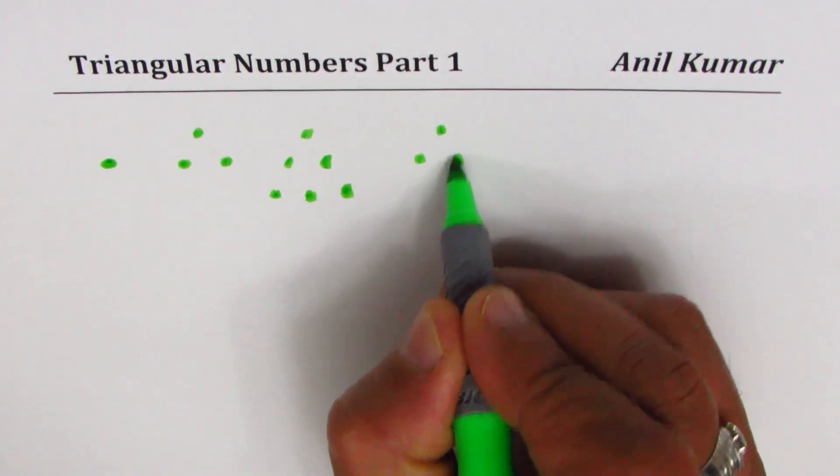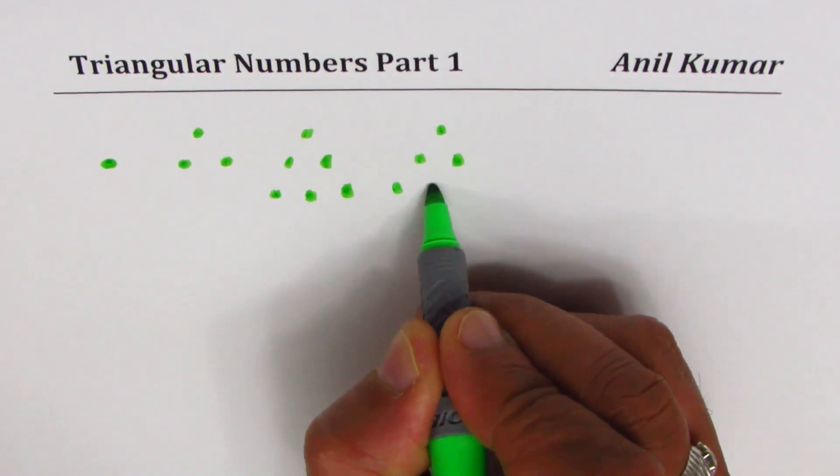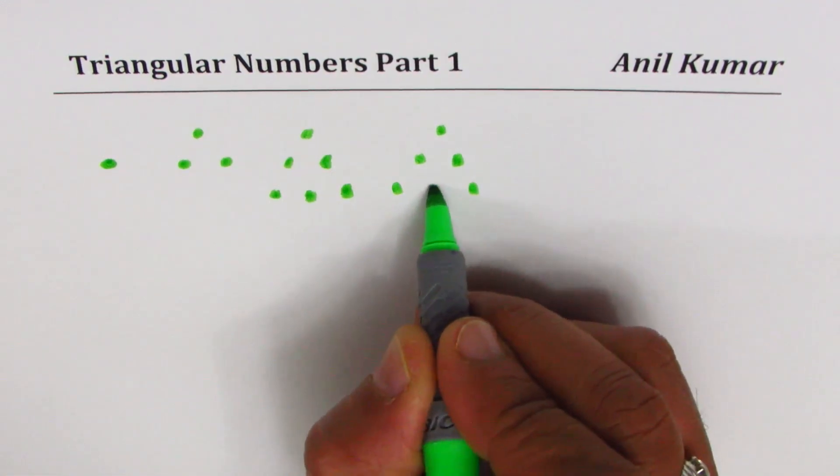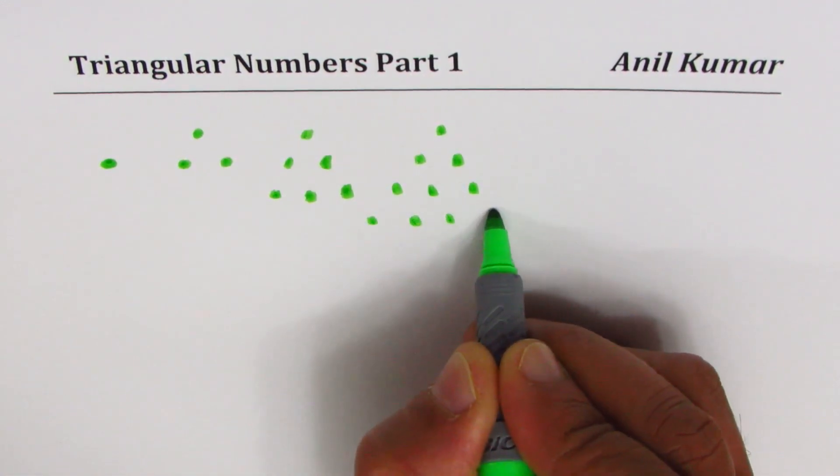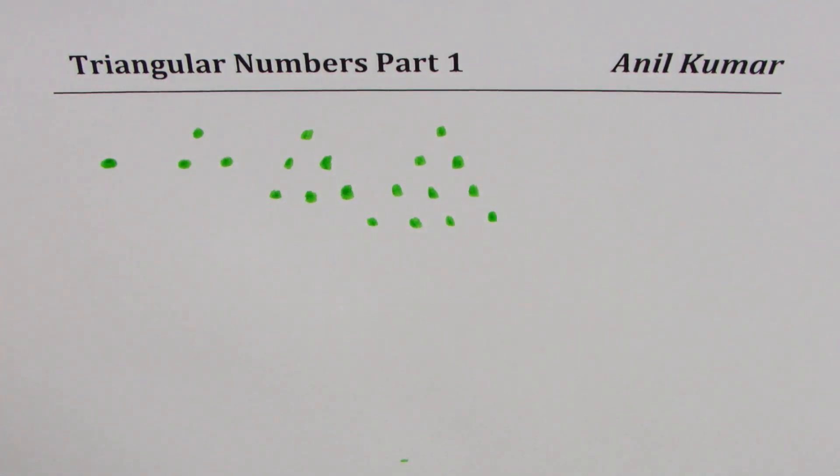So we started with one dot, added two, then we added three, and now we are going to add another one. So what we have here is the fourth pattern. Likewise, this pattern can grow.